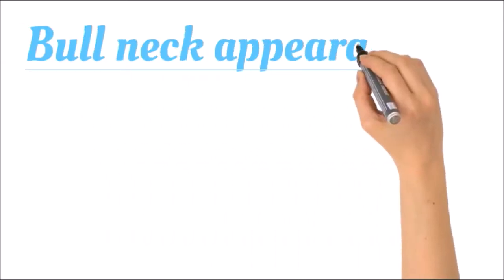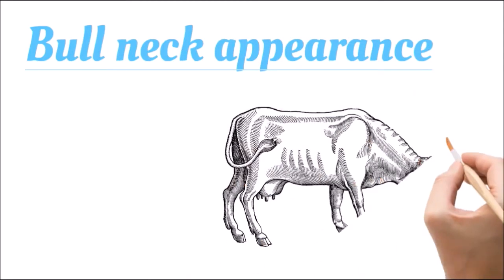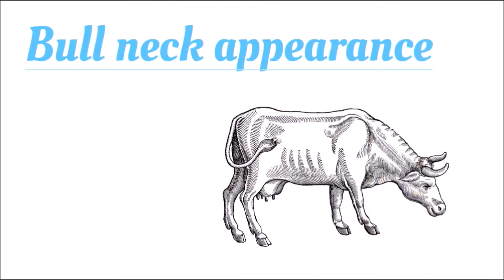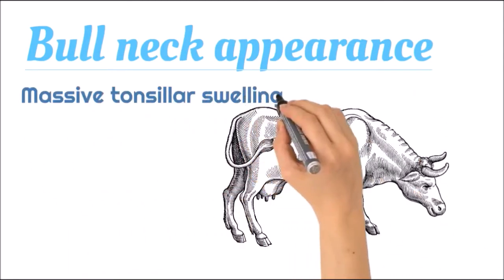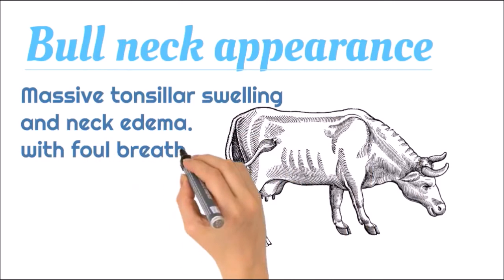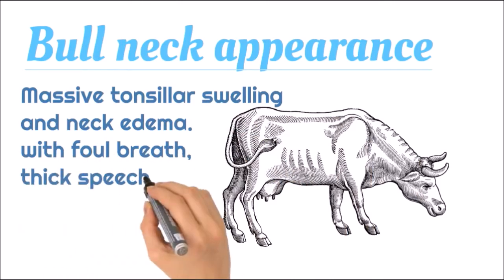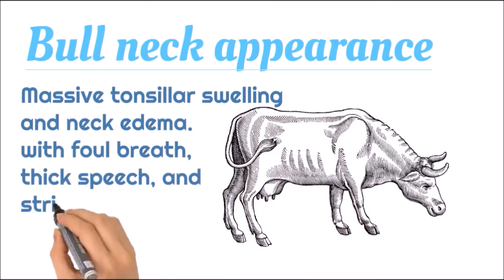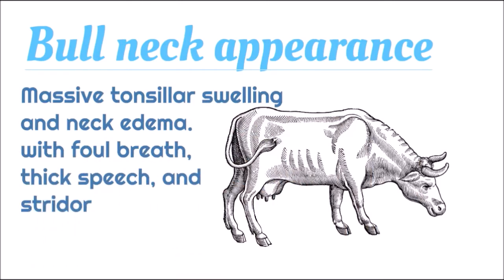There is also a characteristic clinical feature called bull neck appearance, in which there is massive tonsillar swelling and neck edema with foul breath, thick speech, and stridor. Stridor are the whistling type of sounds heard during breathing.